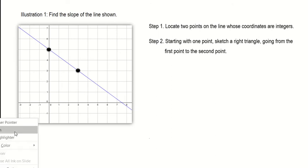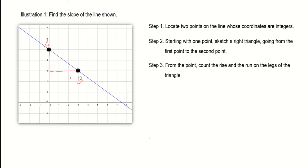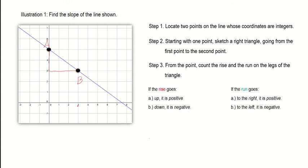In step two, starting with one point, sketch a right triangle going from the first point to the second point. Say, for example, our first point is point A and this is our point B — we are going to sketch a right triangle. Then step three: from the first point, count the rise and the run on the legs of the right triangle. If the rise goes up, it's positive. If the rise goes down, it is negative.